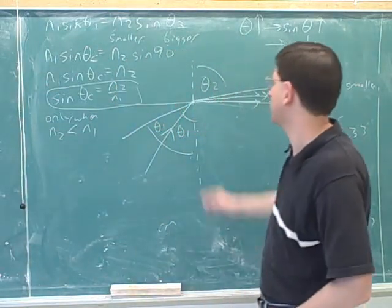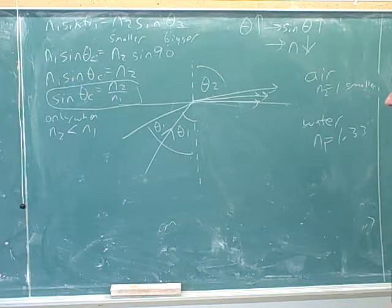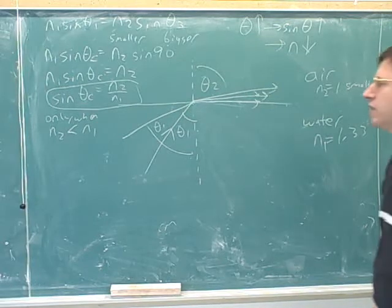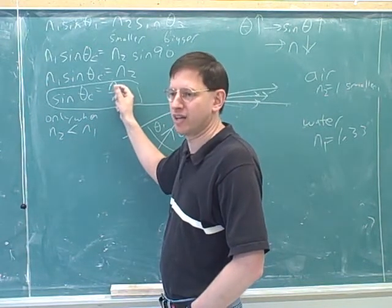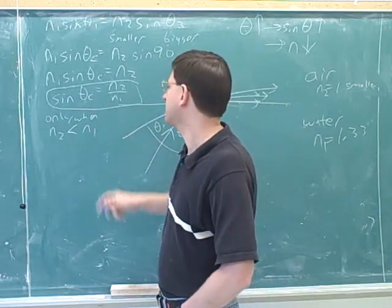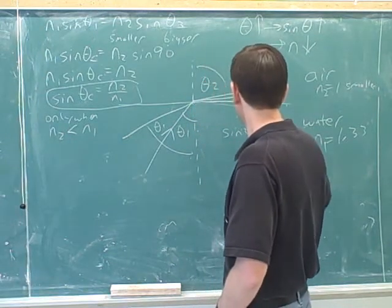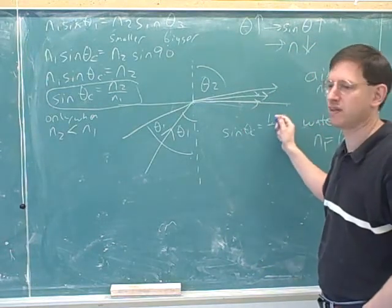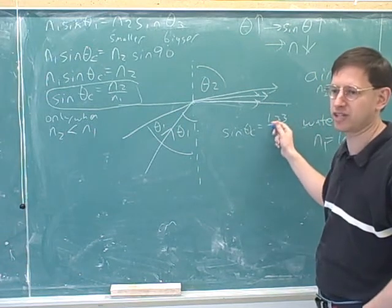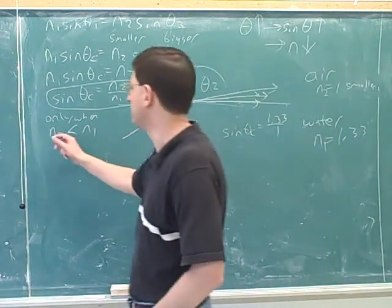Because you only get total internal reflection when the second angle is too big. Well, the second angle can only be too big if the second N is too small. So this only occurs when you're moving into a medium with a lower N. Because remember, because N is getting smaller, that's what's making this new angle bigger. And it could potentially be so big that it's 90 degrees. And then you don't get any transmittal at all. You can also see that mathematically from the formula. N2 has to be less than N1 because signs can't be bigger than one. A sign can't be bigger than one. So if someone didn't understand this, they might try to figure out the critical angle when you were going from the air to the water.